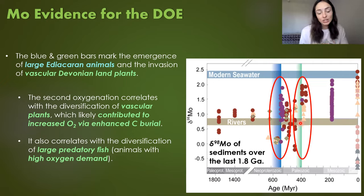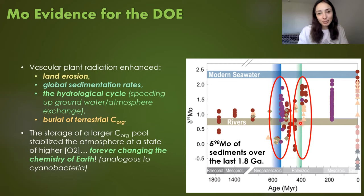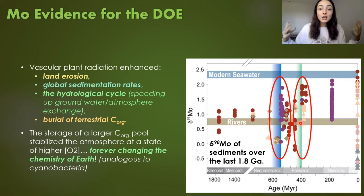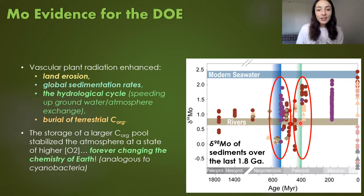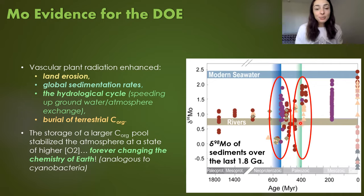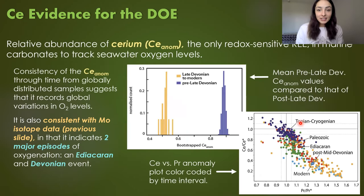Vascular plants increased land erosion, global sedimentation rates, the hydrologic cycle by speeding up groundwater-atmospheric exchange, and the burial of terrestrial organic matter. The storage of a larger organic carbon pool from this terrestrial organic carbon stabilized Earth's atmosphere at a state of higher oxygen content, forever changing Earth's chemistry. This is analogous to the Great Oxidation Event, where cyanobacteria — the first photosynthesizers — changed Earth forever; both events were driven by oxygen-releasing photosynthesizing organisms.